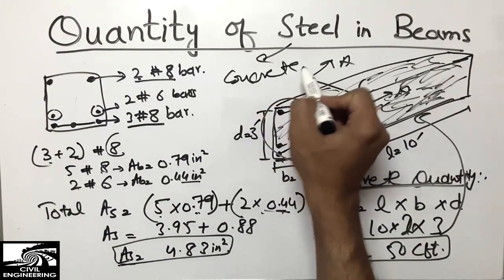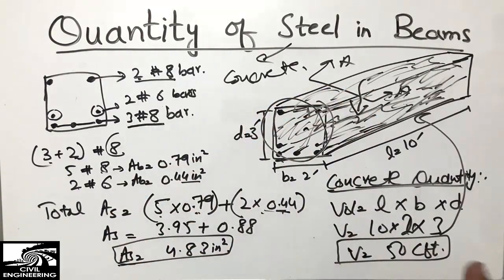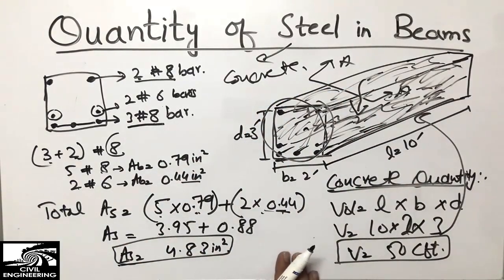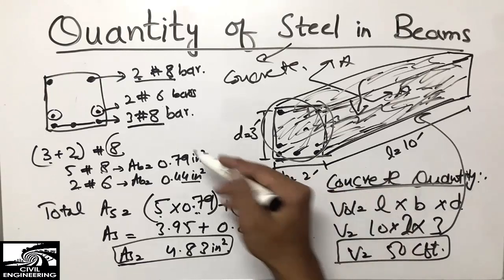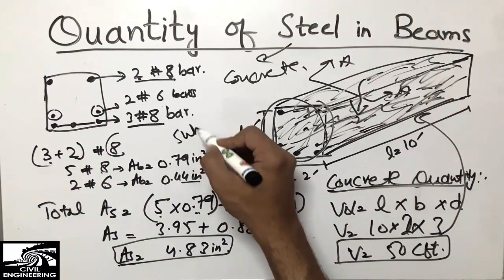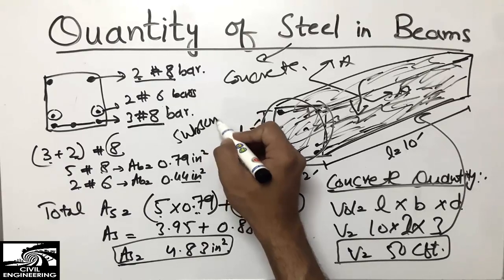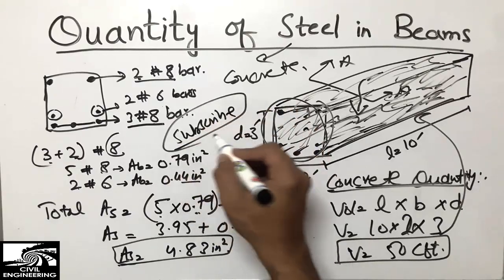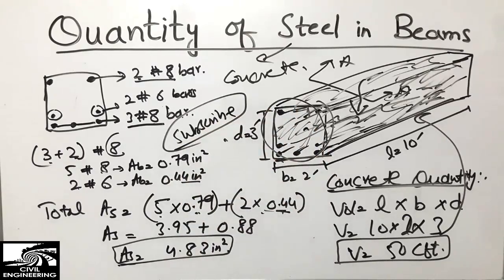This was all about finding the quantity of steel and the quantity of concrete in a beam. This is the method to find the quantities. Please don't forget to subscribe to our channel for more civil engineering updates. Thank you for watching.